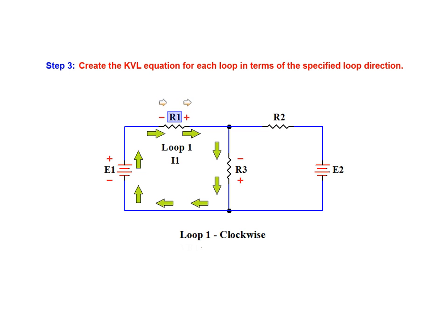When considering the voltage across resistor R1, we're moving from negative to positive, so this value is added. For the voltage across resistor R3, we are again moving from negative to positive, so this voltage is added as well. We complete the walk around the loop by considering the voltage on E1, which is also added as we're moving from negative to positive. Kirchhoff's voltage law states that the algebraic sum of the voltages around any given loop must equal zero, so we set this equation equal to zero.